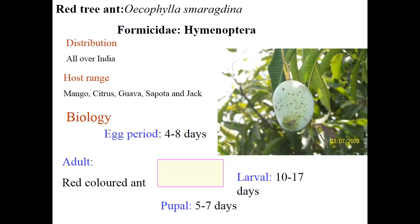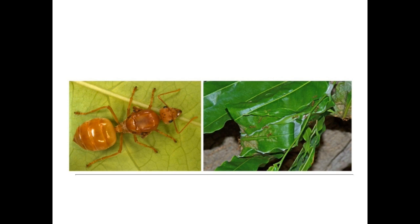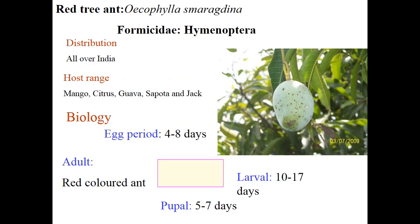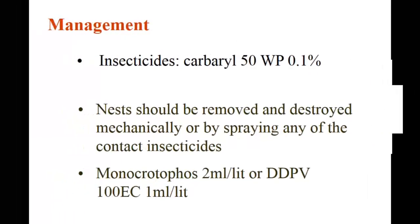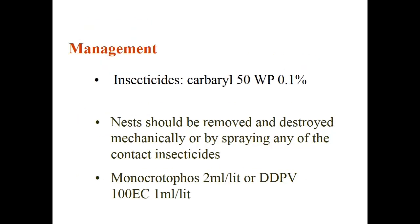Coming to red tree ant — Oecophylla smaragdina, family Formicidae, order Hymenoptera. Egg period is 4–8 days; larval period is 10–17 days; pupal period is 5–7 days. Adult is a red-colored ant. Symptom: ants web and stitch together a few leaves usually at the top of branches and build their nests. The ants are carnivorous and prey upon small insects; however, indirect damage is caused by protecting mealybugs and scales which excrete honeydew. Spray cenophos, chlorpyrifos, or dimethoate for management; nests should be removed and destroyed mechanically or by spraying contact insecticide.